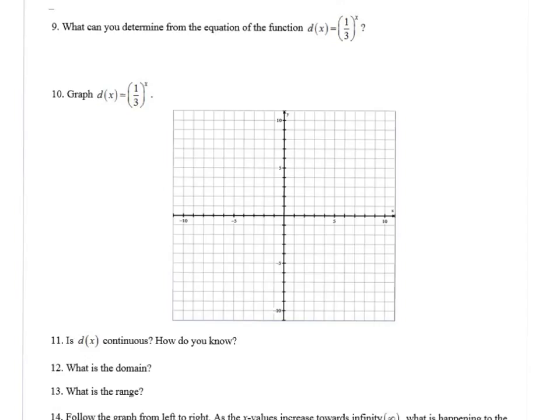So for 9, because a is 1, I know my y intercept will be 1. And because b is a third, I know my graph is going to decrease or decay. So let's plug in, if I plug in positive values, I'm just going to get fractions. So when I plug in negative 1, I'll get 3. And negative 2, I'll get 9. And then I can draw my decreasing graph. And don't forget your horizontal asymptote at y equals 0.